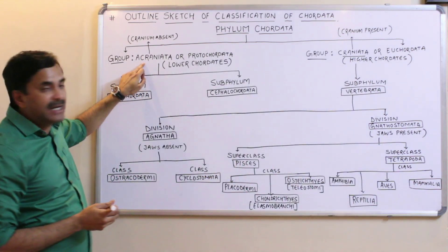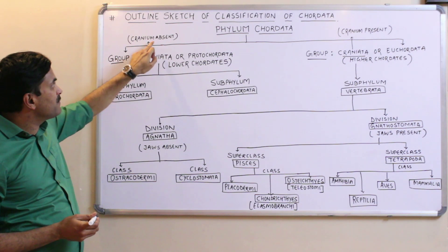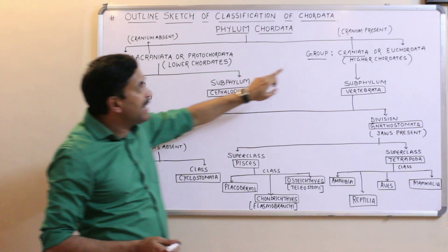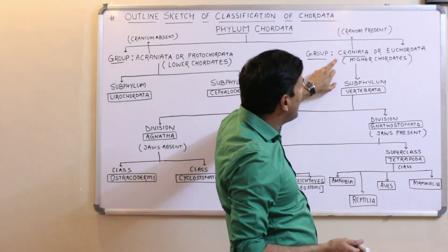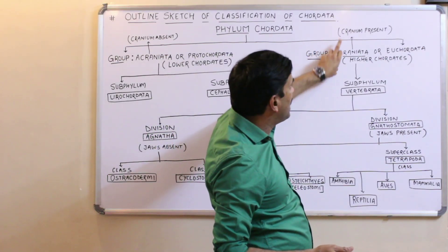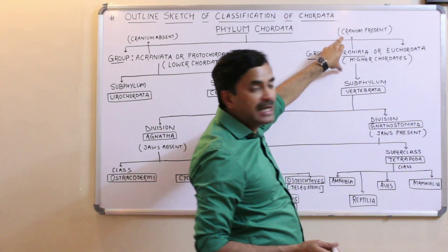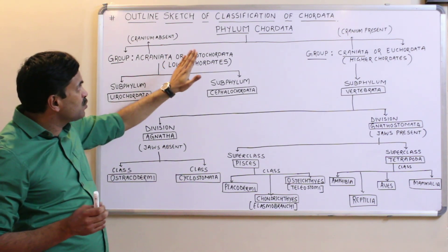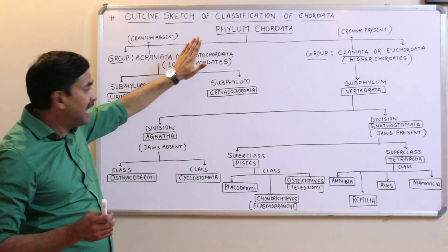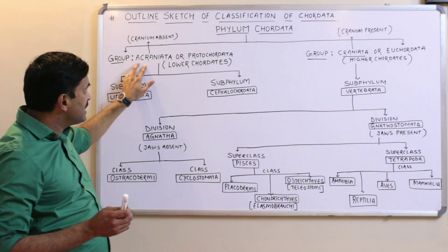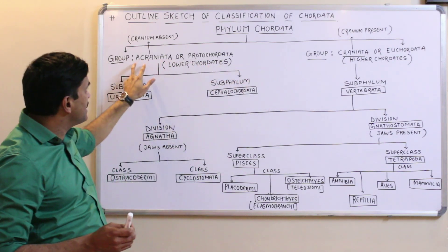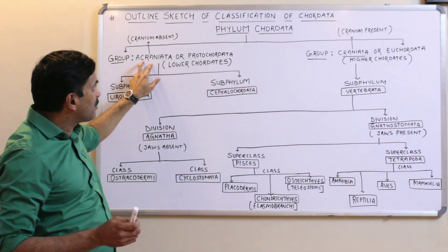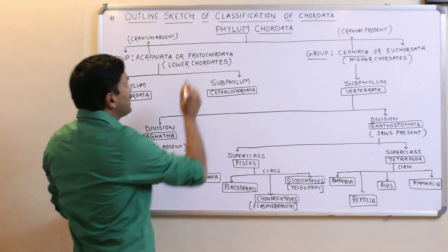Acraniata means those which do not have a cranium, and Craniata are those which have a cranium. Cranium is also called the brain box. So the two major groups of phylum Chordata are Acraniata, where cranium is absent, and Craniata, where cranium is present. The Acraniates are also called proto-chordates, meaning primitive chordates.